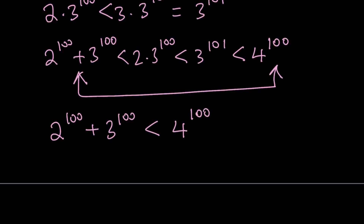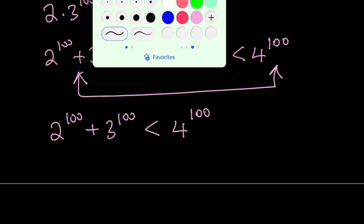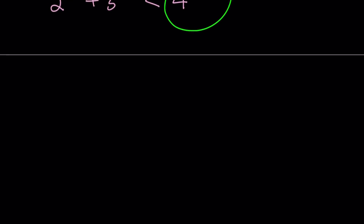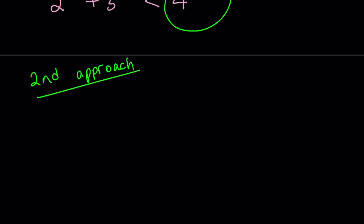This is a really good result because it allows us to compare the two numbers we were looking for. So as a result, we can say that 2 to the power of 100 plus 3 to the power of 100 is going to be less than 4 to the power of 100. Since we were looking for the larger number, 4 to the power of 100 is going to be the larger number. Now let's see how we can compare these using a different approach — my second approach. For my second approach, I'll be working with fractions. Let's go.